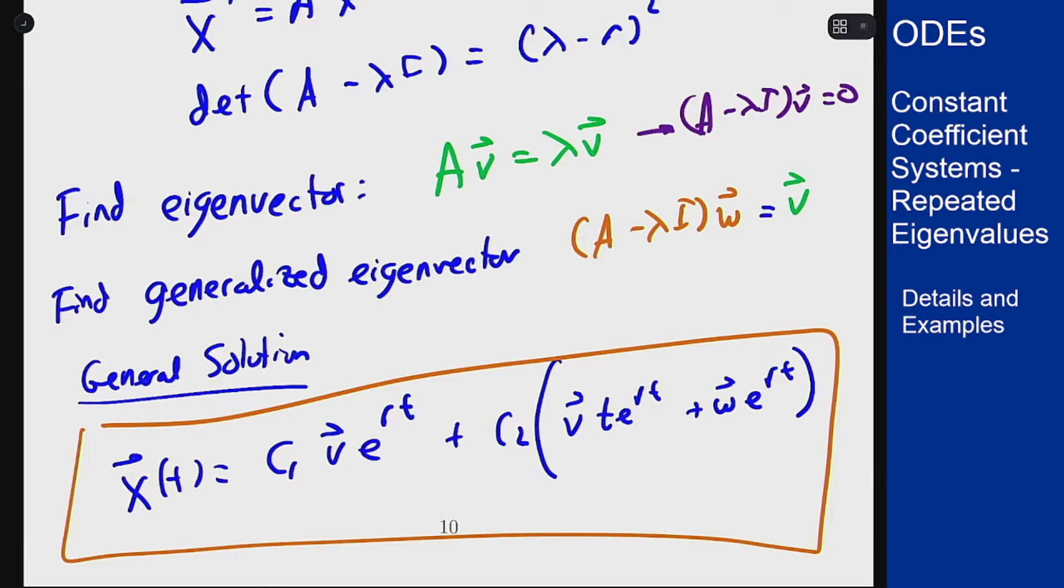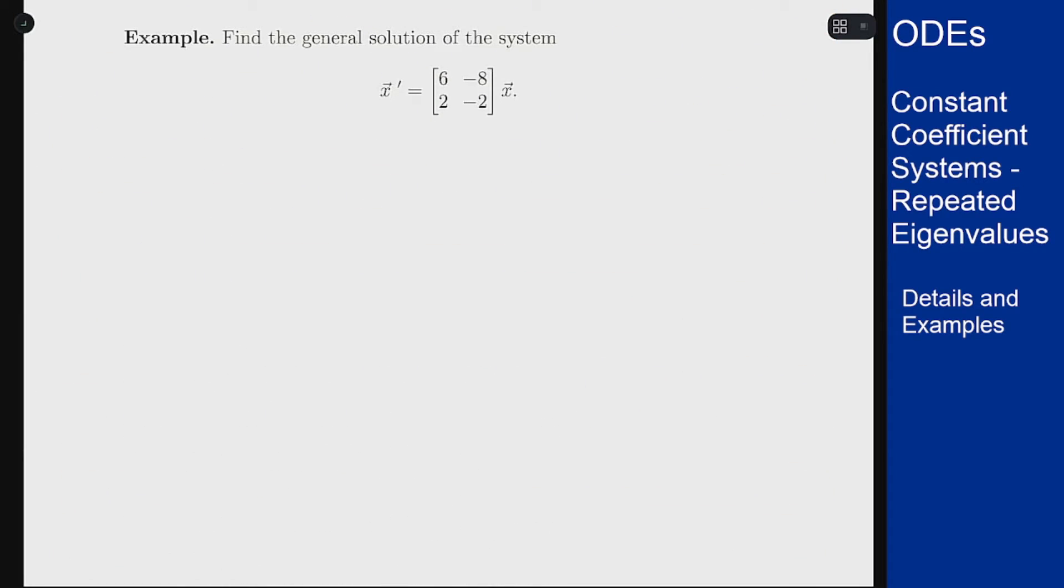So for an example of working this out, let's look at this system here. x prime is [6, -8; 2, -2] times x.